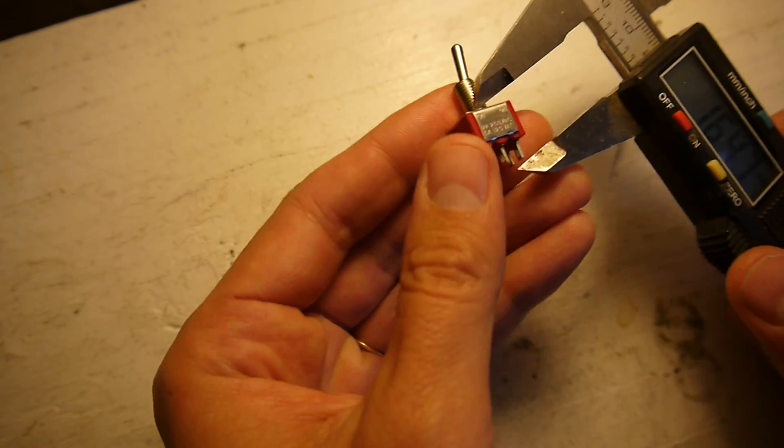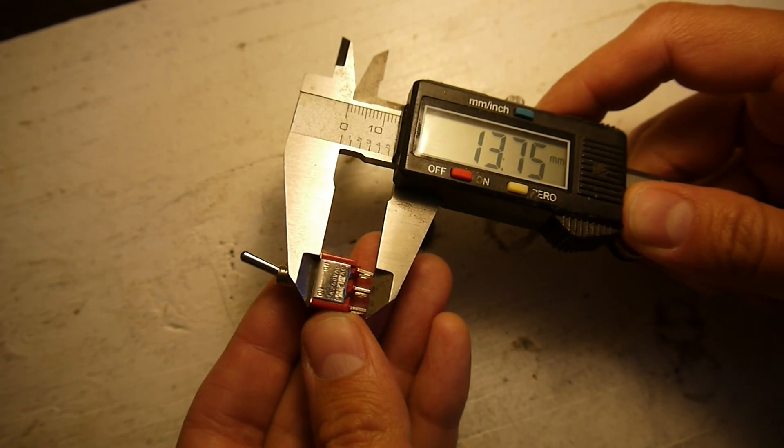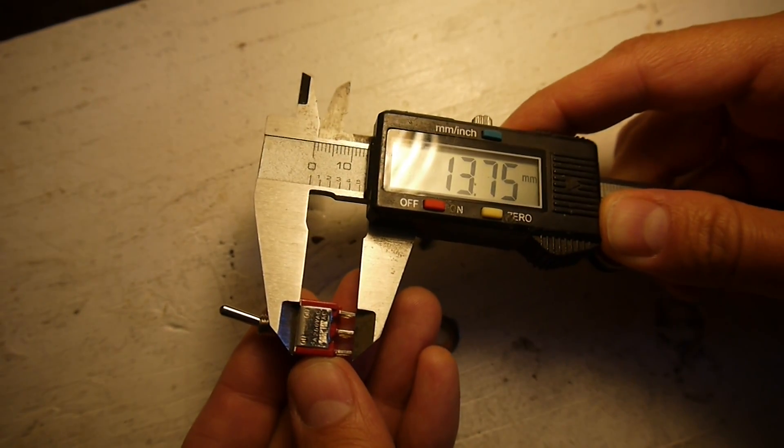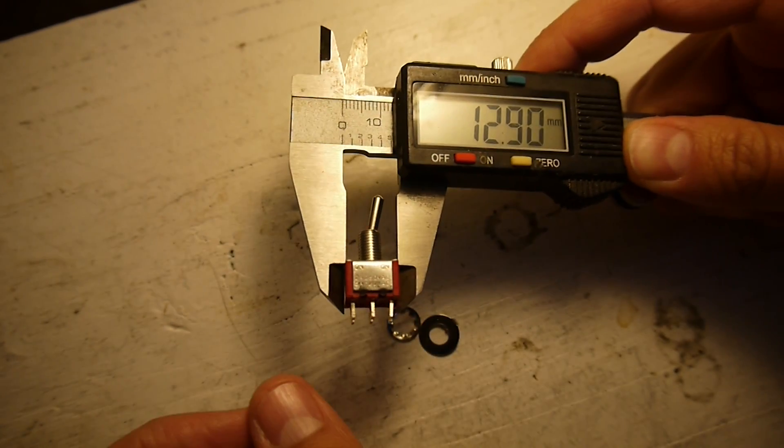What else? Oh, I guess one would want to see what this is. So, that's the body to the end of the lugs. That's 13.75. The body itself is 12.9.